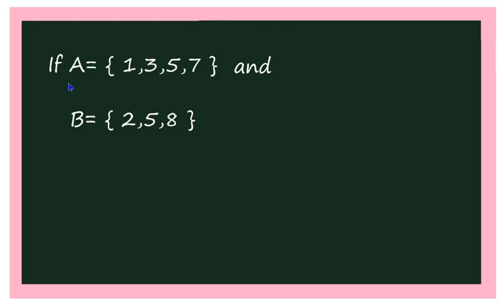Now let us take an example to find the Cartesian product of two sets. If A = {1, 3, 5, 7} and B = {2, 5, 8}, you can find A cross B. It is better to write in a particular order so you will not miss any element.